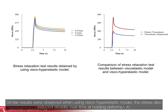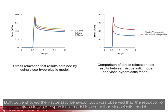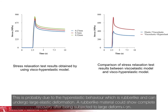Similar results were observed when using the visco-hyper-elastic model — the stress also reduced steadily over time at holding deformation. The graph on the right side shows the comparison of the stress-time curve between the visco-hyper-elastic model and the visco-elastic model. Both curves show visco-elastic behaviour, but the reduction of stress for the visco-hyper-elastic model is greater, probably due to the hyper-elastic behaviour, which is rubber-like and can undergo large elastic deformation with complete recovery.